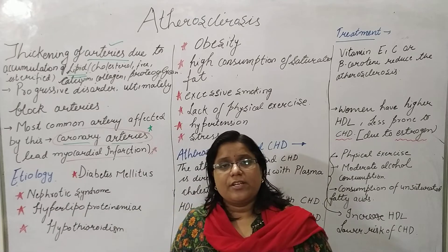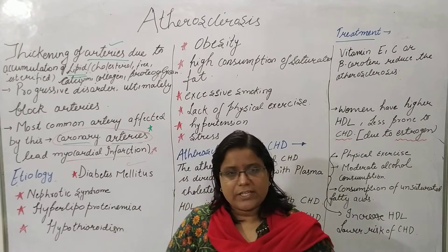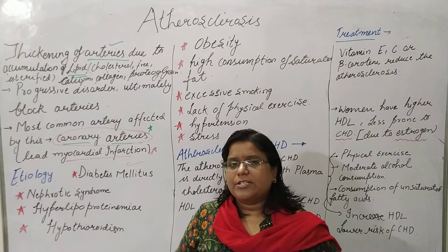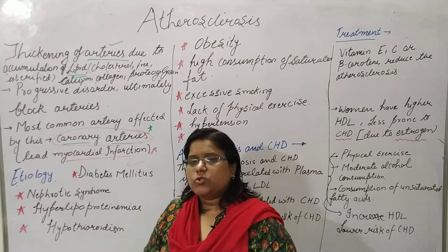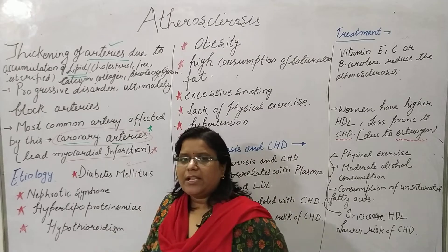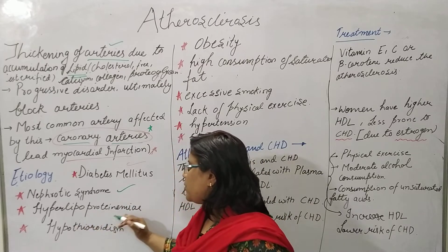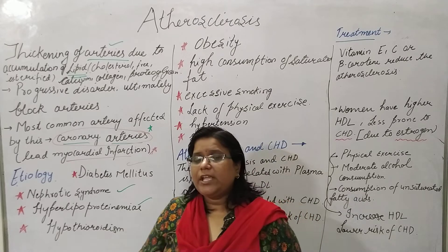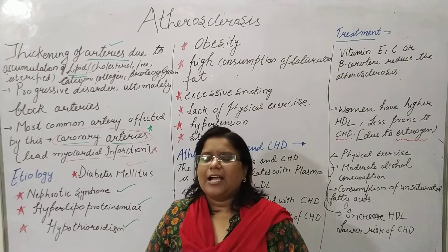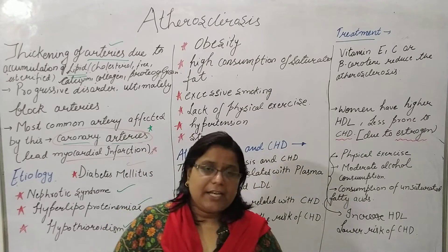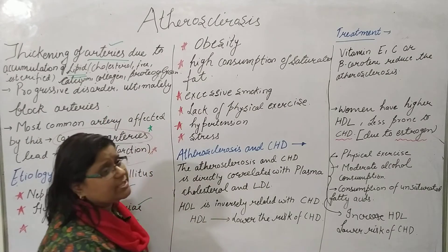Regarding etiology — the causative agents that provoke such thickening: first is diabetes mellitus; second is nephrotic syndrome, where elements that should be flushed out by the kidneys remain in the blood and deposit in the coronary artery; third is hyperlipoproteinemia, where excess lipid and proteins deposit in the arteries; and fourth is hypothyroidism.